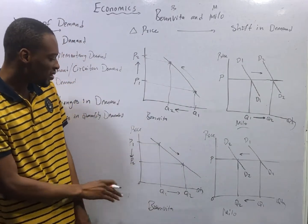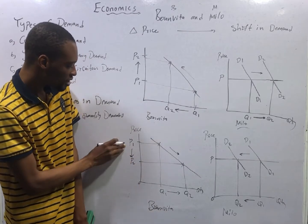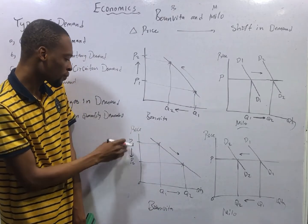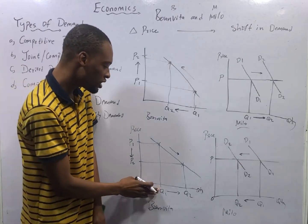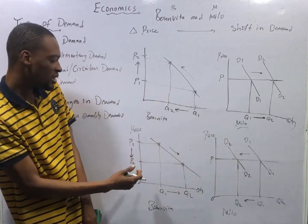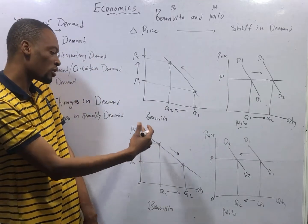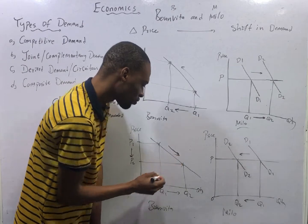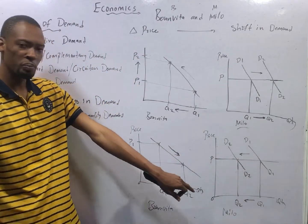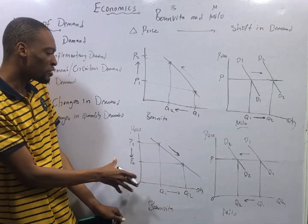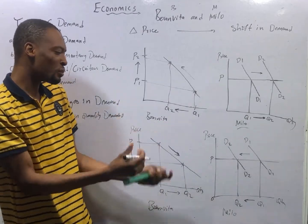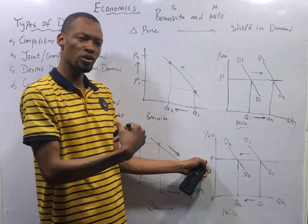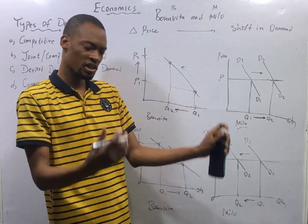In a situation where for Bonvita there is a decrease in price — price drops from P1 to P2 — quantity increases from Q1 to Q2, and the curve slopes downward. What happens? This will not favor Milo. Since Bonvita is becoming more favorable, there will be a shift in demand for Milo. But in this case, the shift is leftward or inward, which shows a decrease in demand.